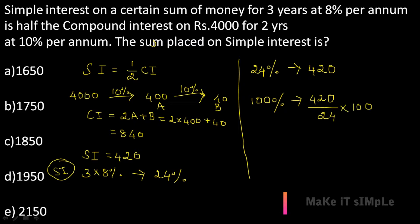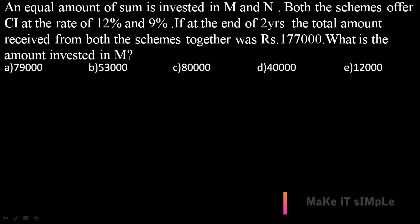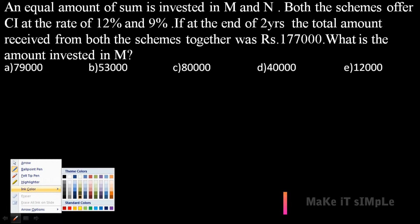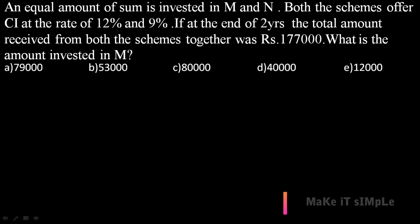Calculating: 420 divided by 24 multiplied by 100 gives us 1750. So the principal sum placed on simple interest is rupees 1750.